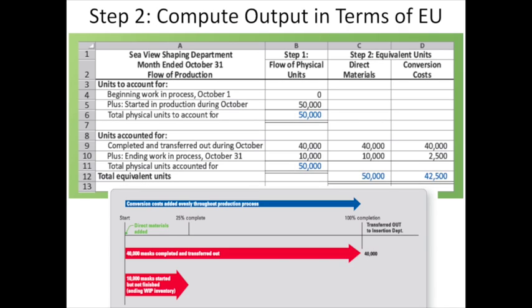Step two is to compute the output in terms of equivalent units. Recall from our timeline that conversion costs are added evenly throughout the process, and direct materials are added at the beginning. 40,000 units are completed and transferred out, so they're 100% complete as to materials and conversion — all 40,000 are equivalent units. We still have 10,000 left in ending work in process, so we need to compute equivalent units for those as well.